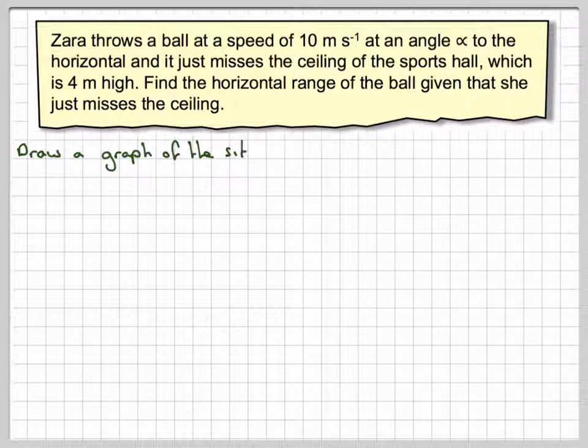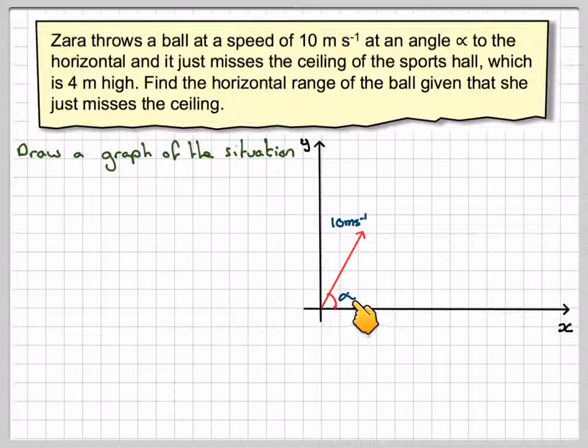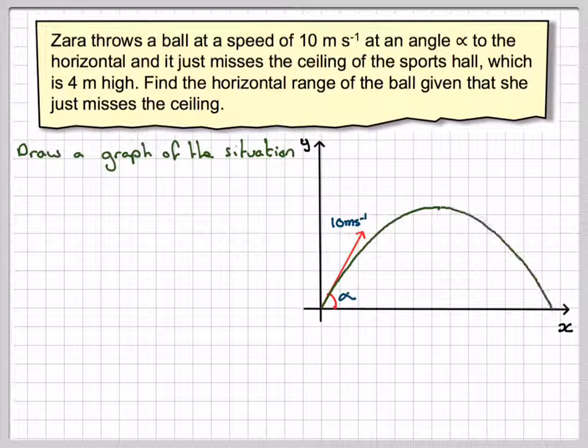First thing we need to do is draw a graph of the situation. So draw a set of axes X and Y, with this being positive. Initial velocity of 10 metres per second at some angle alpha and here is the parabola, the gravity acting downwards against it, minus 9.8 downwards direction.